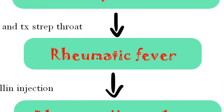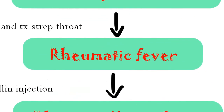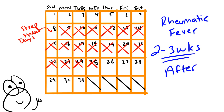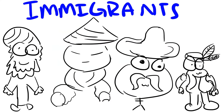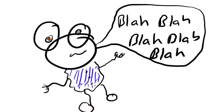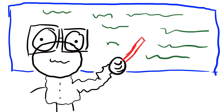If not treated, there's a 3% chance it can progress to rheumatic fever, which can start to develop 2-3 weeks after the strep throat infection. It's usually going to be in immigrants, but the symptoms come up around the teenage years or later, so it takes a really long time to do some damage.